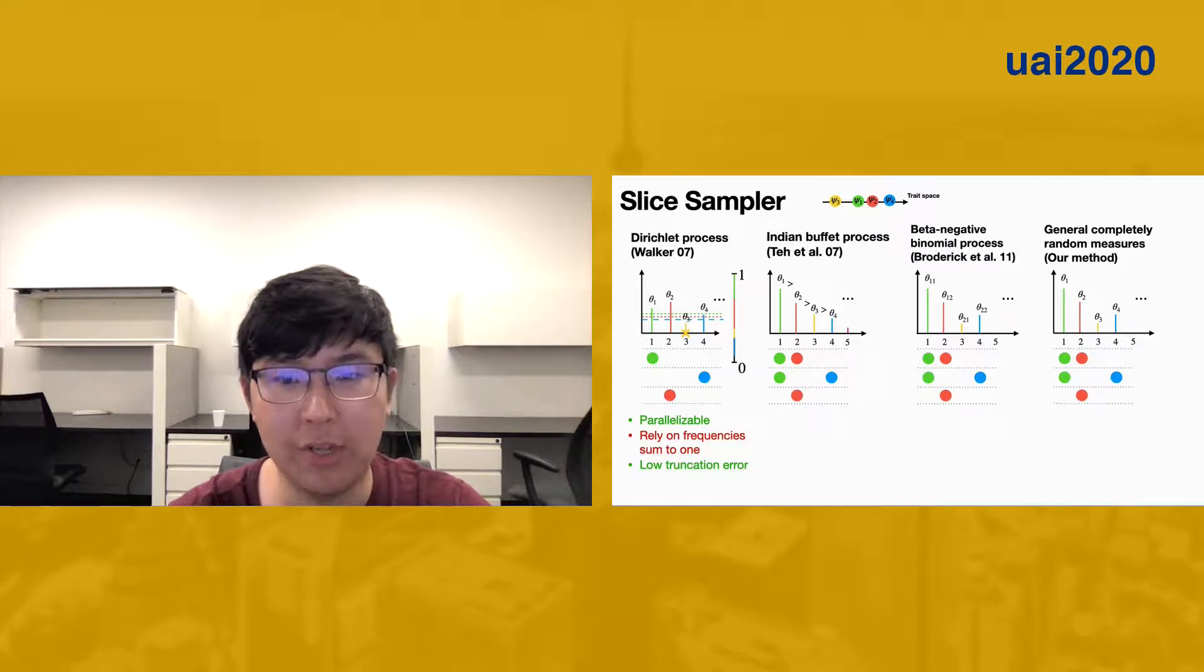Previous work on slice sampler for Indian buffet process is based on the stick-breaking representation that samples one uniform auxiliary variable conditional on the length of the minimum active stick. This is not parallelizable due to the dependencies introduced by the single auxiliary variable and relies on the fact that stick-breaking representation for Indian buffet process is monotonically decreasing.